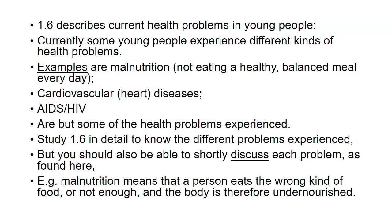Section 1.6 describes current health problems in young people. Currently some young people experience different kinds of health problems. Examples are malnutrition — meaning not eating a healthy balanced meal every day — cardiovascular diseases, that's heart diseases, AIDS, and HIV, among others. Study 1.6 in detail to know the different problems experienced, but also be able to briefly discuss each one. For example, malnutrition means a person eats the wrong kind of food or not enough, and the body is therefore undernourished.